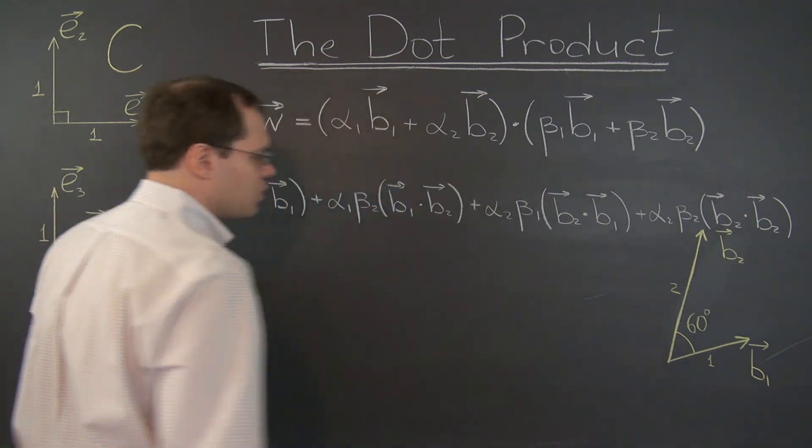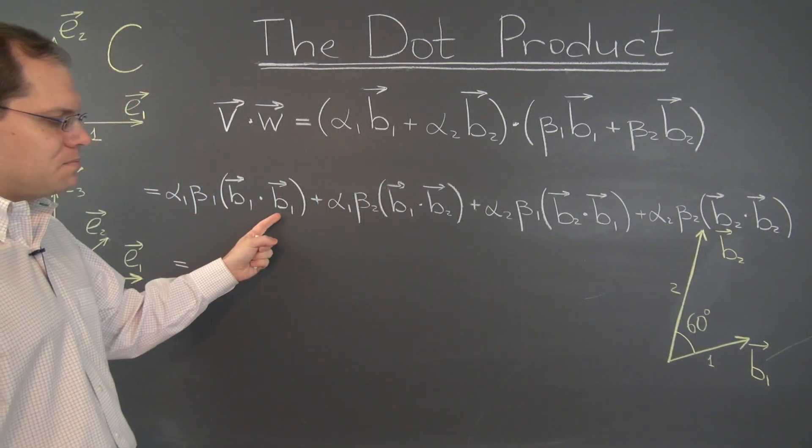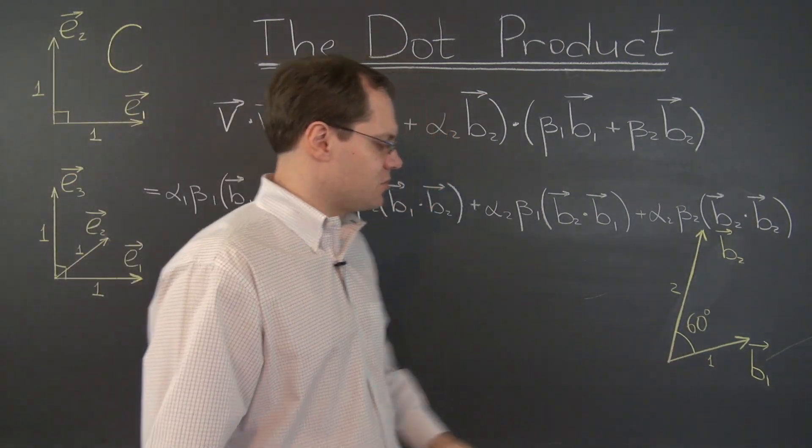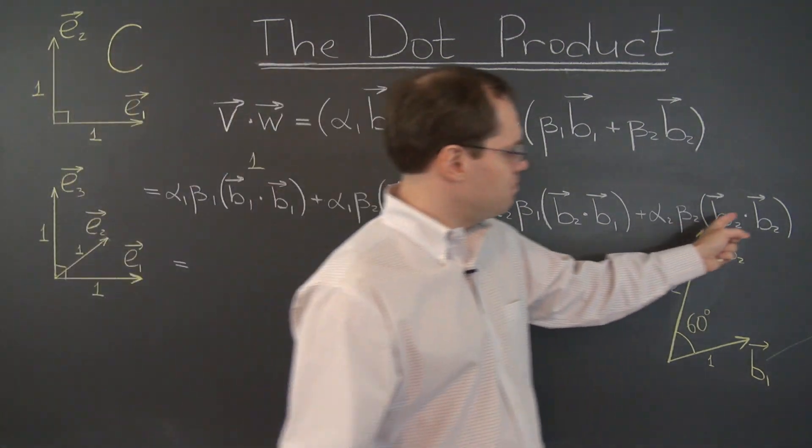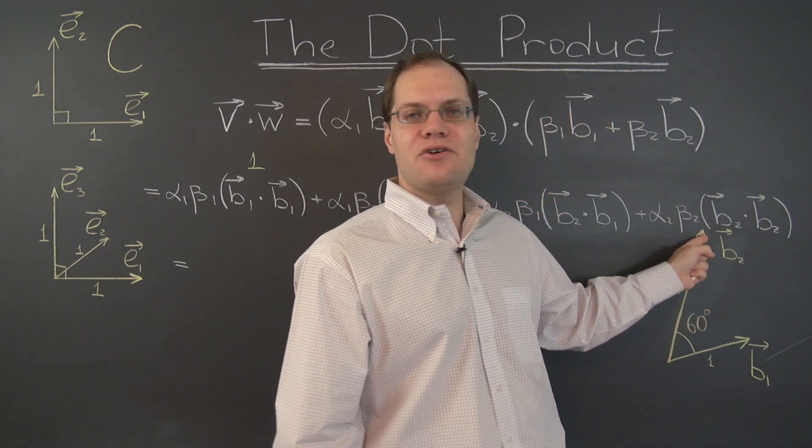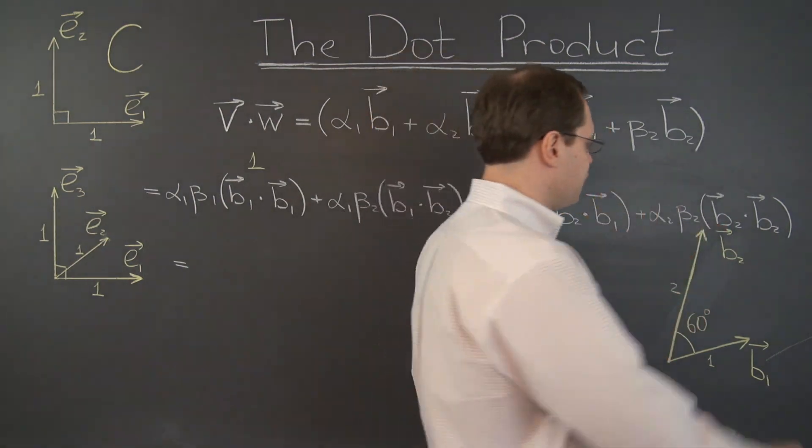Let me pick a yellow chalk. So b1 dotted with b1 is the length of b1 squared. And that of course is 1. And let's go for b2 dotted with b2. That's the length of b2 squared. So that's 4.